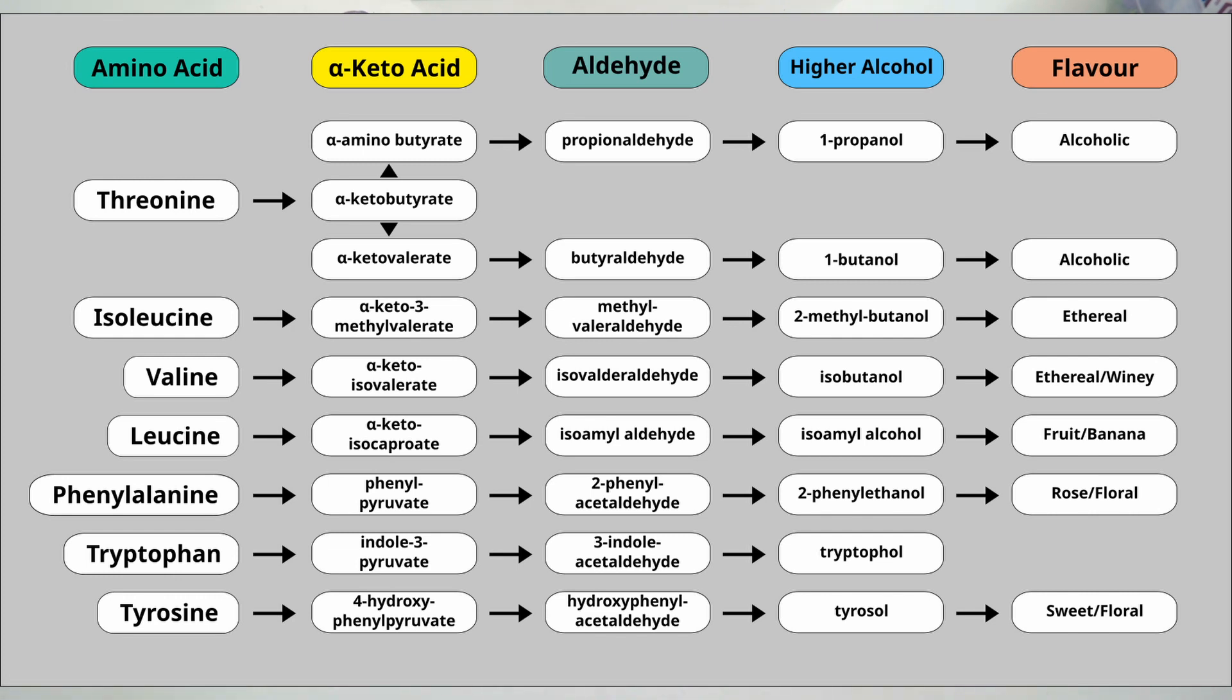Then we have leucine which gets turned into alpha-keto-isocaproate, then isoamylaldehyde and then isoamylalcohol. So isoamylalcohol is probably one of the more well-known fusel alcohols. It has a fruity or banana flavor. If you've ever had juicy fruit gum you've had isoamylalcohol. That is the flavor that gives juicy fruit its characteristic flavor.